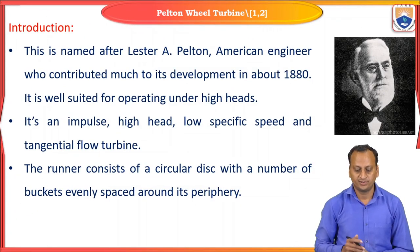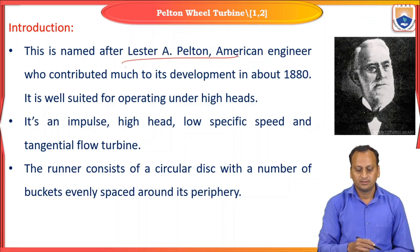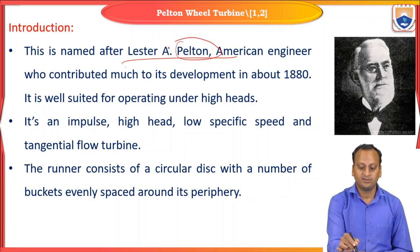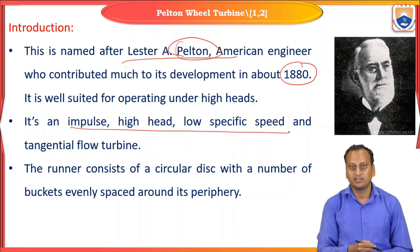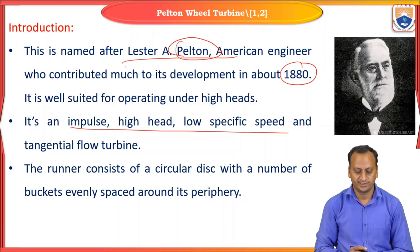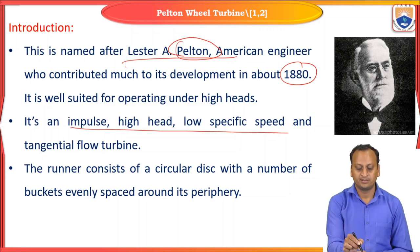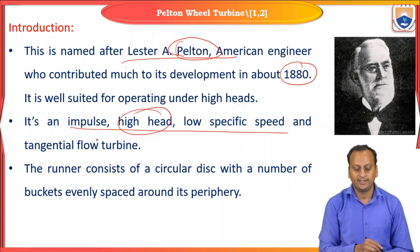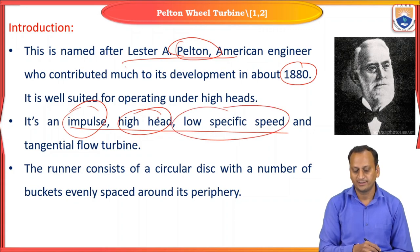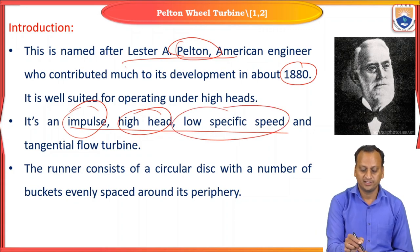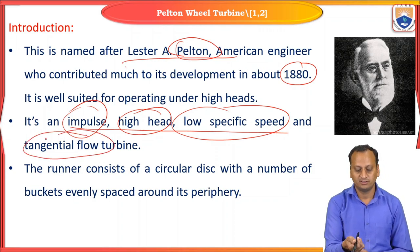The Pelton wheel turbine is named after Leiser Pelton, who invented it in the 1880s. It can be classified in different ways: based on head it is a high-head type; based on available energy at the inlet it is an impulse turbine; based on specific speed it is a low specific speed turbine; and according to the direction of flow through the runner it is a tangential flow turbine.